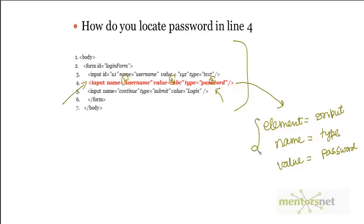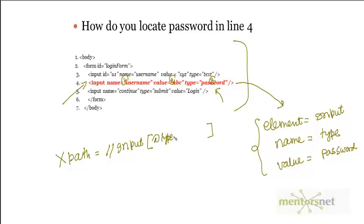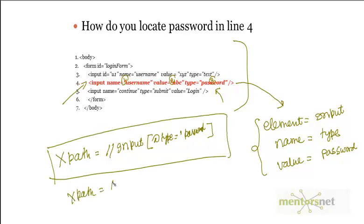For example, the attribute name is type and the attribute value is password. With this kind of scenario you can write your XPath yourself. The XPath will be double slash, then the element name input, then square brackets. Inside the brackets you give the attribute name preceded by @, so @type, then equals, then the value in single quotes — 'password'. The generic formula is: double slash element-name[@attribute-name='value'].